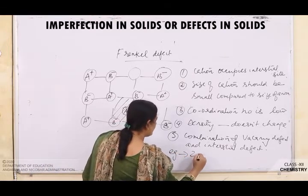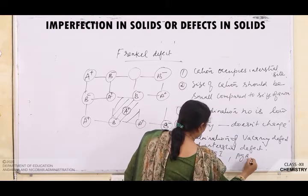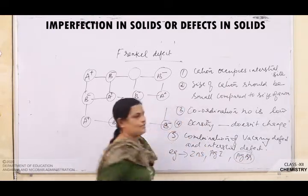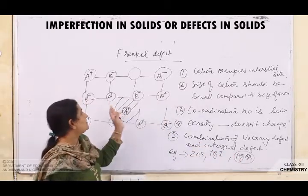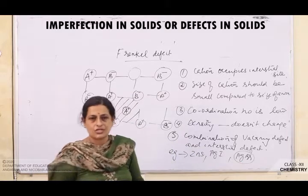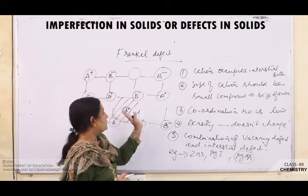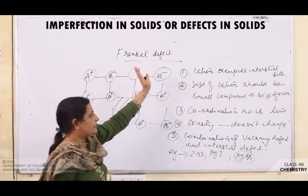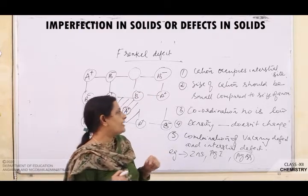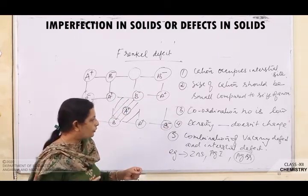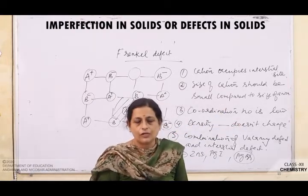Examples of Frenkel defect include zinc sulfide (ZnS), AgI, and AgBr. Note that AgBr also shows Schottky defect — it is an exception showing both Schottky and Frenkel defects. Frenkel defect is also shown by ionic solids. The cation leaves the lattice site and occupies the interstitial site; cation size should be small; coordination number should be low; density is not disturbed.